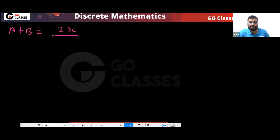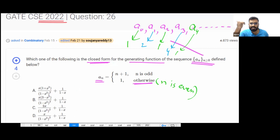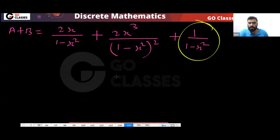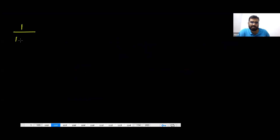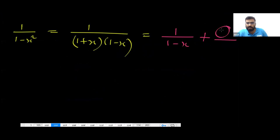Your A + B will be: 1/(1 - x²) + 2x/(1 - x²) + 2x³/(1 - x²)². I want to separate out 1/(1 - x). Since 1/(1 - x²) = 1/((1 + x)(1 - x)), I can write the numerator as (x + 1) + (1 - x) — that is, x + (1 - x) — to isolate 1/(1 - x) plus something else.